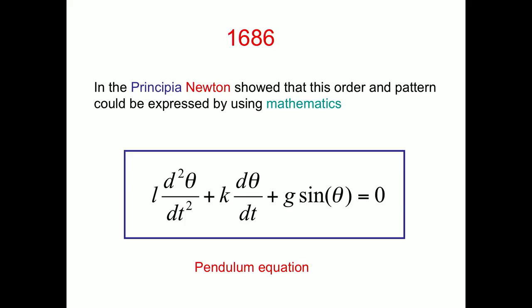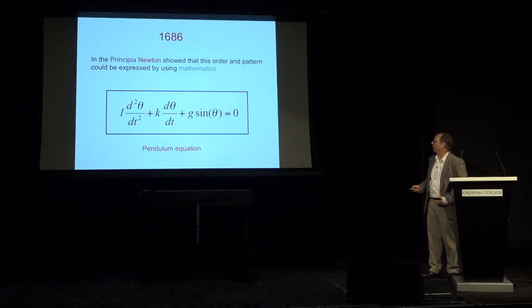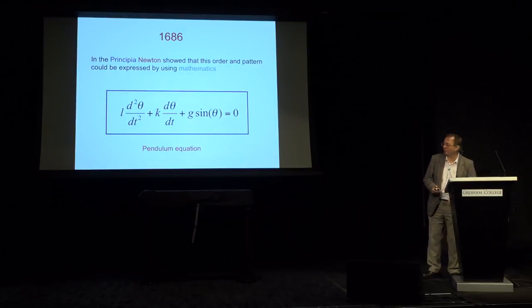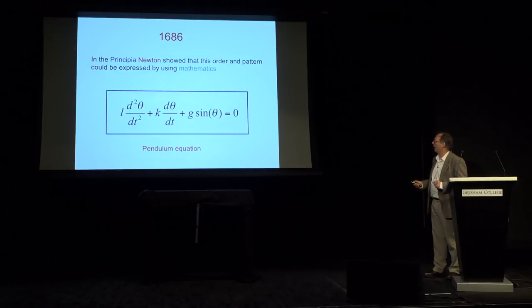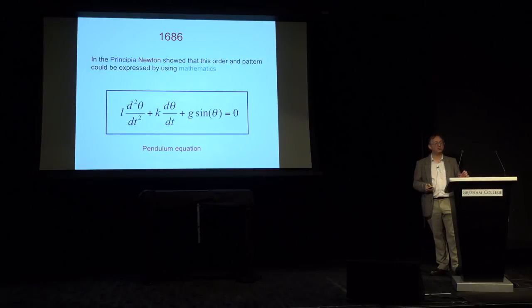So, this equation is actually quite hard to solve. This term here, the sine theta, is a non-linear term, which makes it quite hard to solve. And this term here is a model of the air resistance, which also makes it a bit harder. But if you take the assumption that the air resistance is small and the angle of the swing is not too large, then this equation simplifies and then you can solve it.